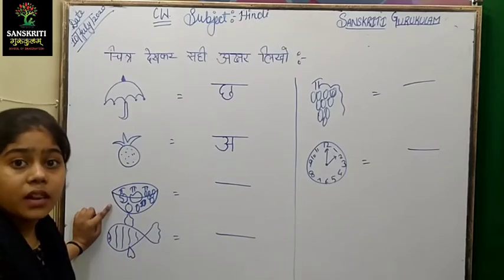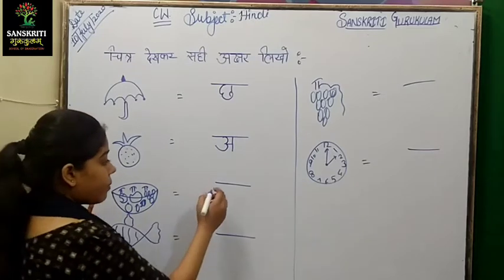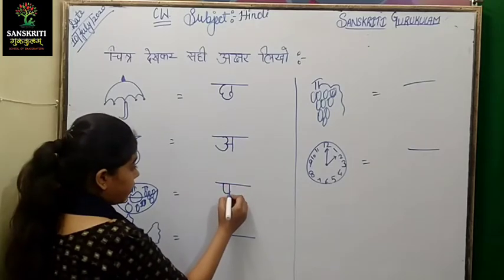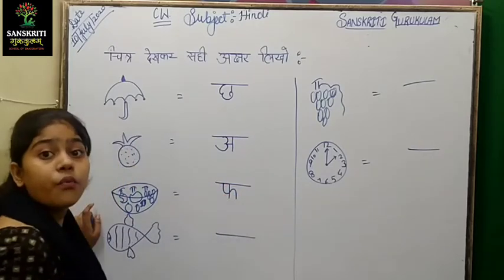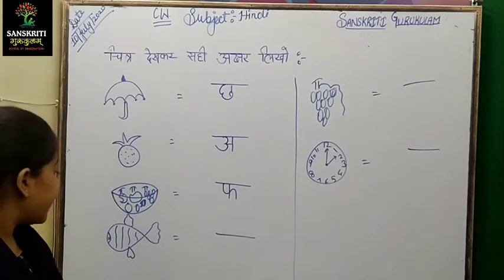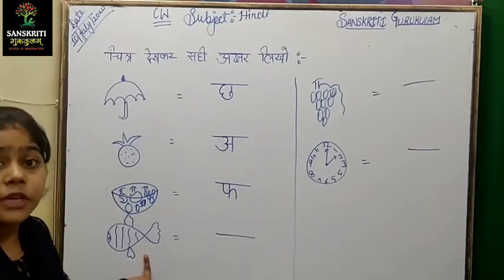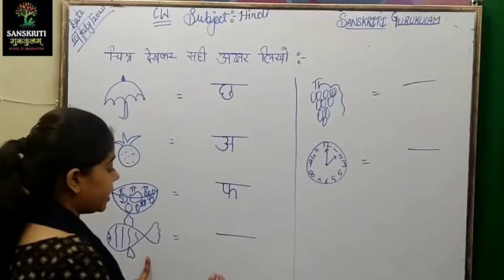Next picture: Fase Ful. What do we have to do? Fase Ful. Next, what do we have to do? Maase Machli.